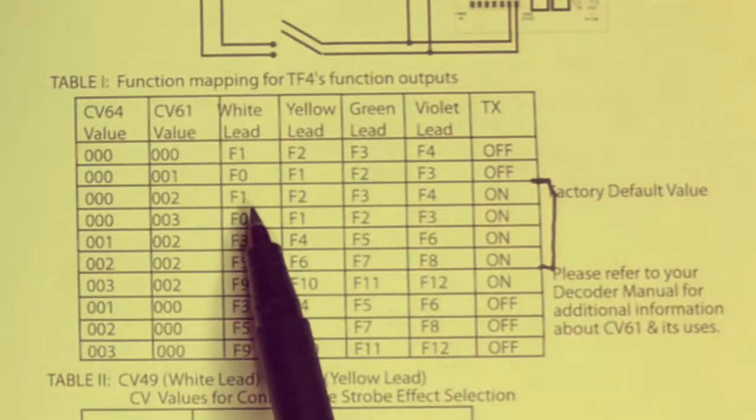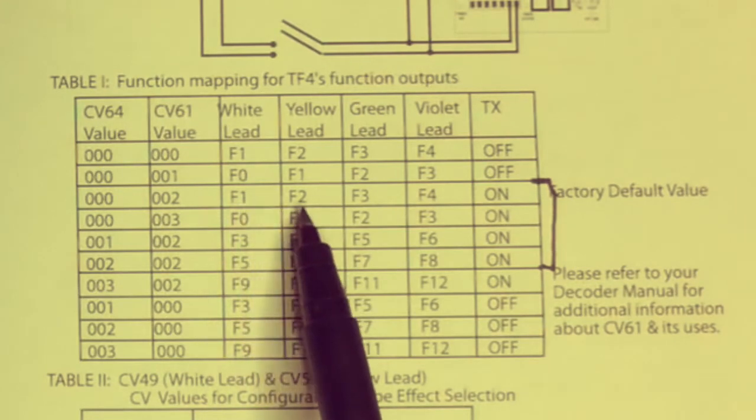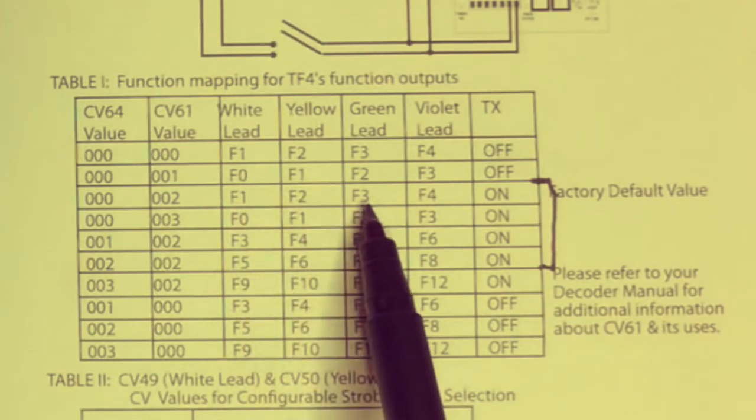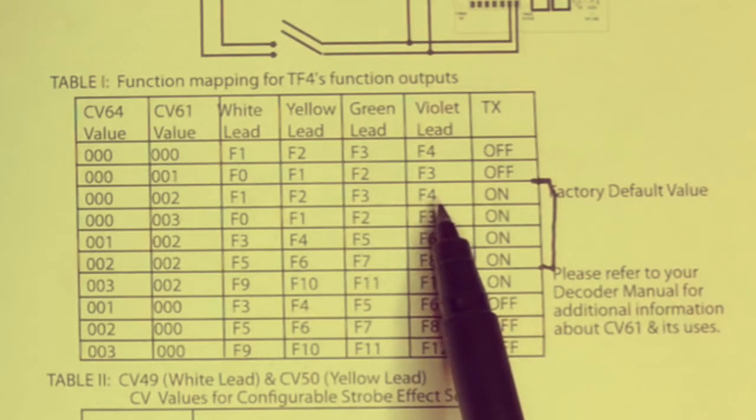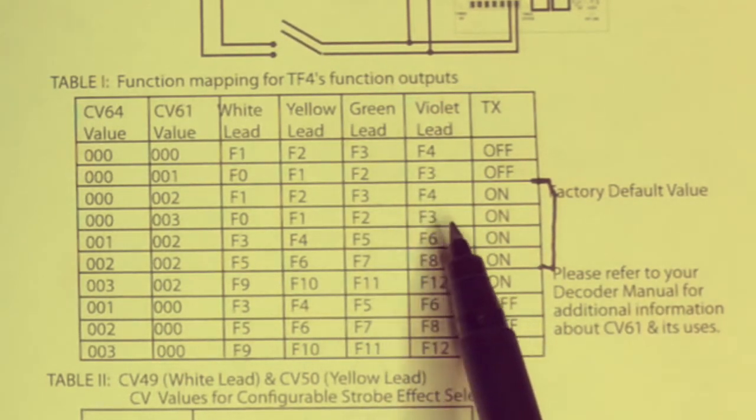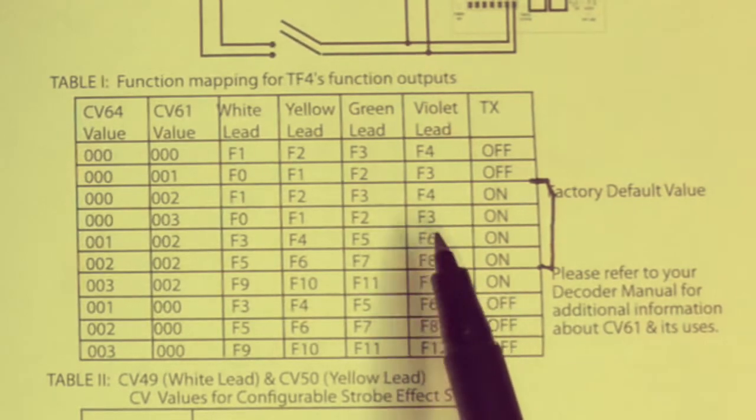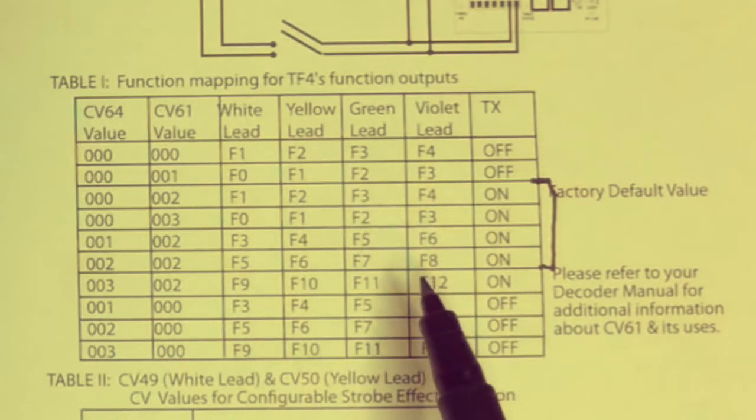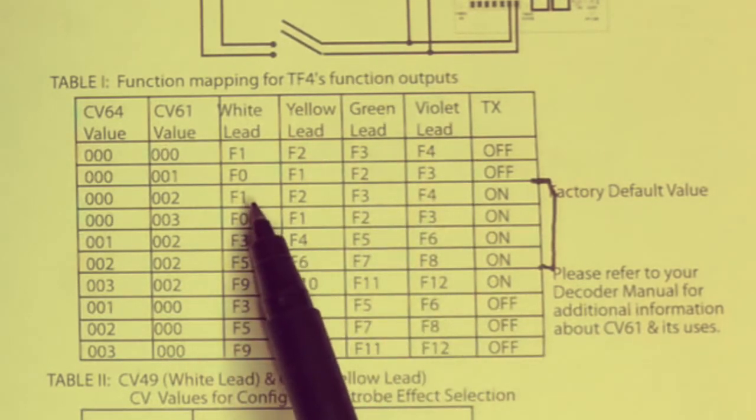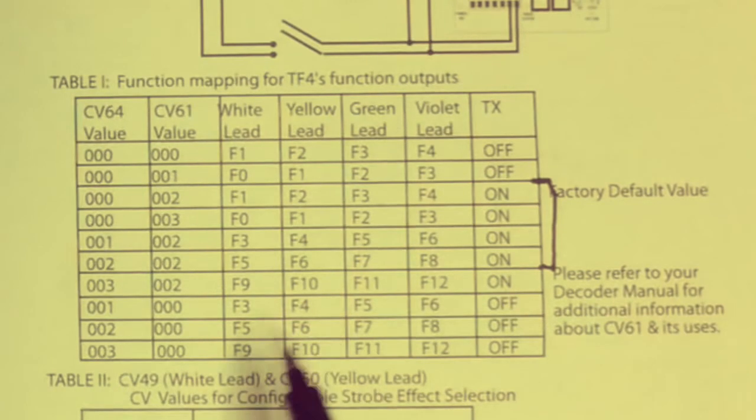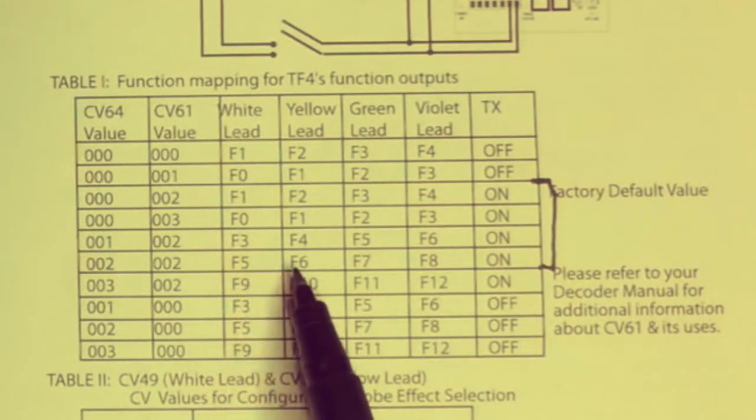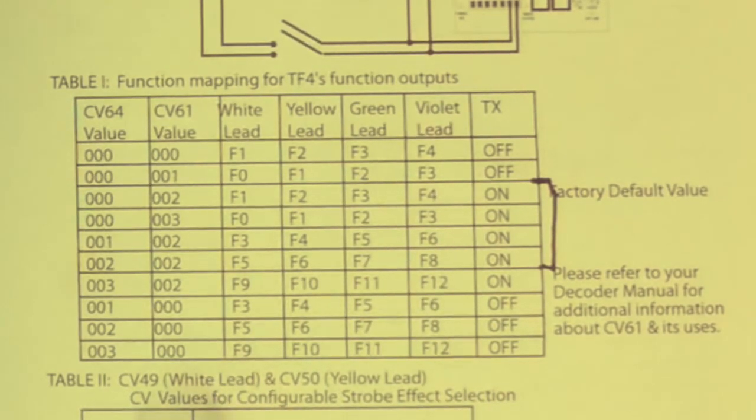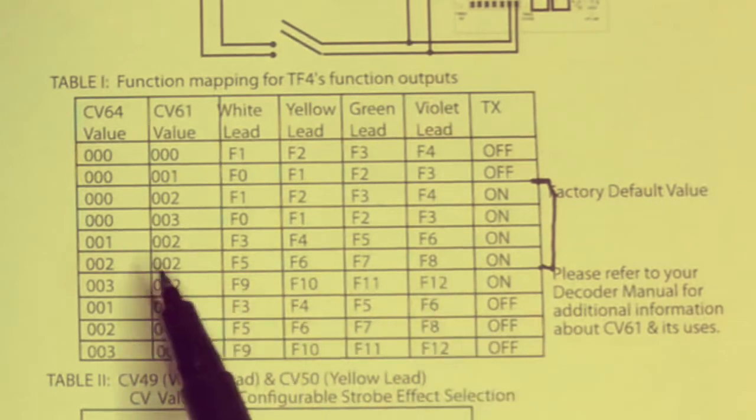Because we want our transponding to be on, we're looking for values where TX is on, and that's these values here. Coming over here we see that our white lead could be function one, our yellow function two, our green function three, and our violet lead function four. Remember, the blue lead is not a function lead—it's common to all of those. So our four functions are represented by the white, the yellow, the green, and the violet. Now I like to use function one to turn on my main light, so I would probably adopt the one, two, three, and four, but you can adopt totally different sets here like F5, F6, F7, and F8.